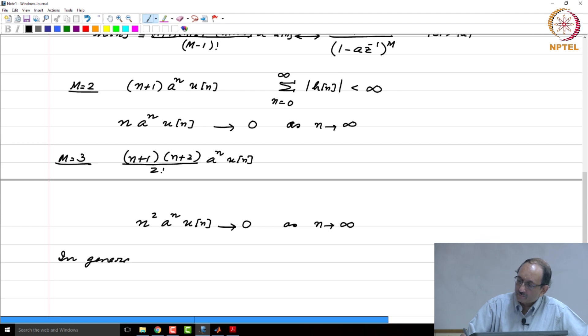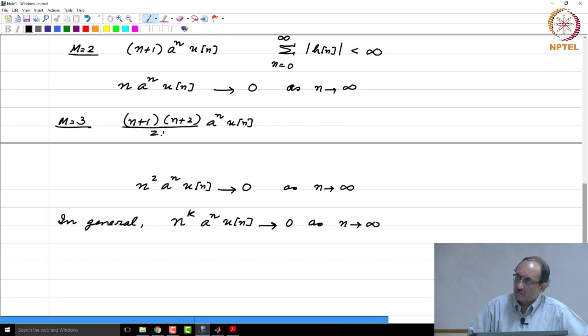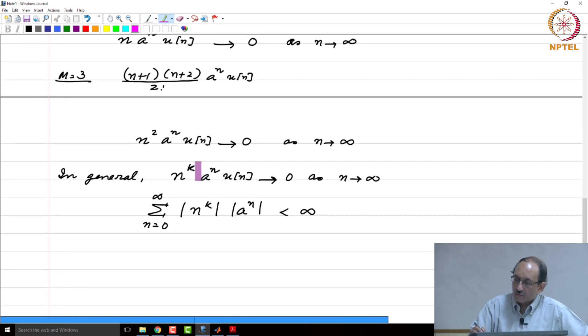In general, n to the k a to the n u of n tends to 0 as n tends to infinity and this is also less than infinity. No matter what k is, exponential decay eventually wins over polynomial growth. Therefore, the impulse response dies down and the impulse response also is absolutely summable. This you can also infer from the fact that the pole is inside the unit circle and hence this sequence is belonging to the class of L1.